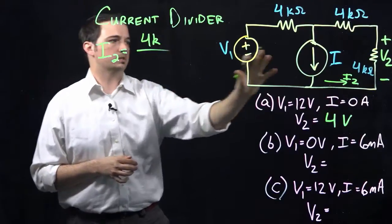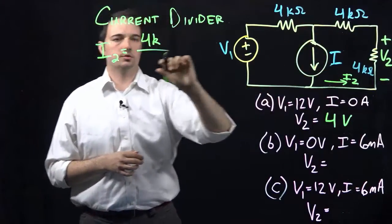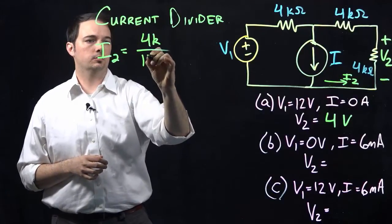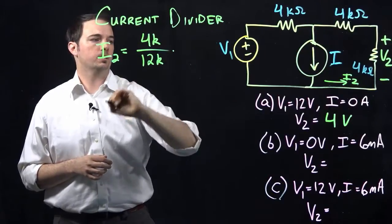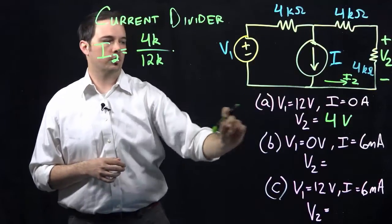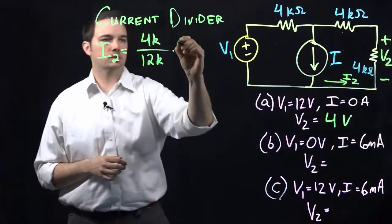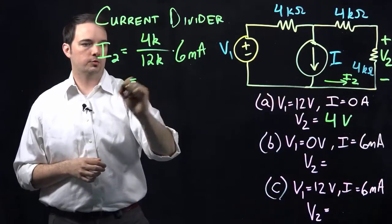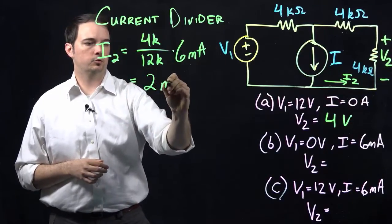And then again, over the sum of the combination, since all these resistors would more or less sum together as though in series, so that would be over 12K. And then multiplied times my total current, which again is indicated as 6 milliamps, which will give me a quantity of 2 milliamps.